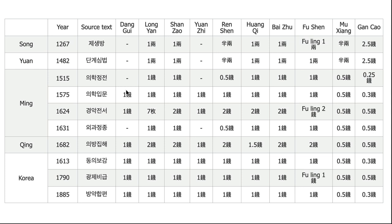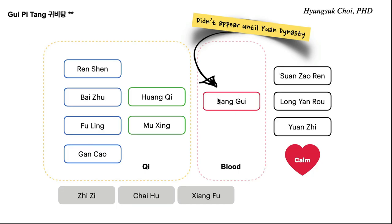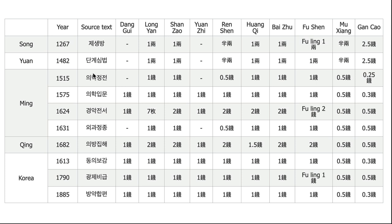So if a patient does not have blood loss or bleeding conditions — only mental disease with qi deficiency — you don't have to use danggui. Historically, danggui appeared three to five hundred years later, in the Ming dynasty.